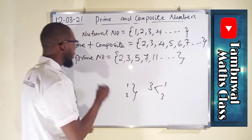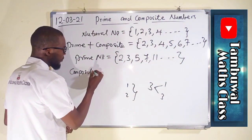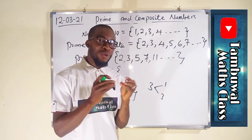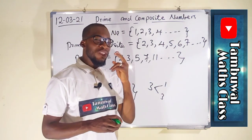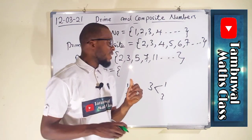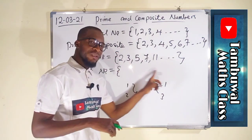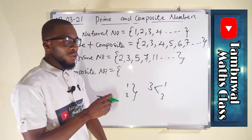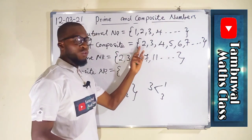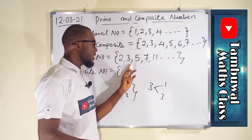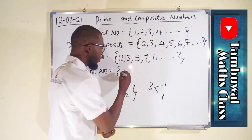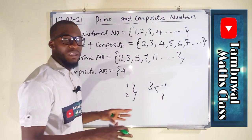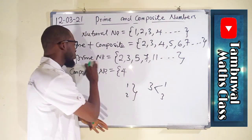What about composite numbers? Composite numbers are those numbers that have more than two factors. All the prime numbers we listed have two factors. Any other number falls under composite numbers. So composite numbers are just the complement of the prime numbers.